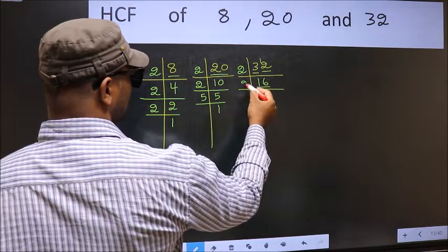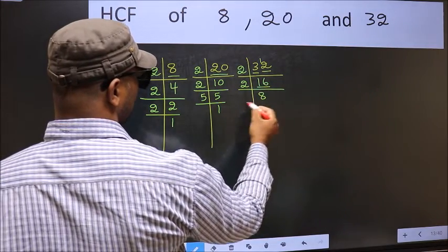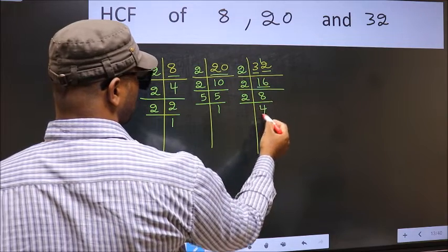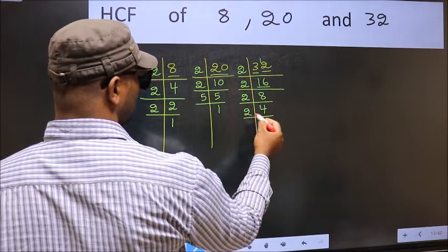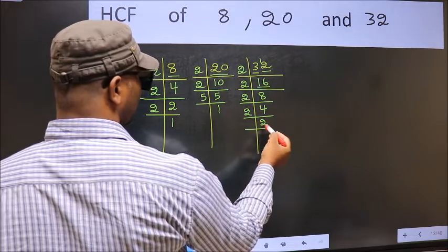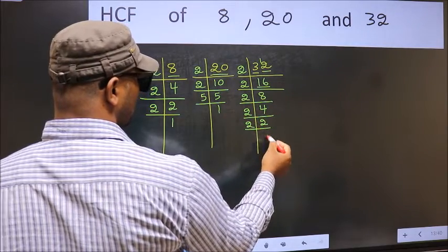Now 16 is 2 times 8. 8 is 2 times 4. 4 is 2 times 2. Now 2 is a prime number, so 2 times 1.